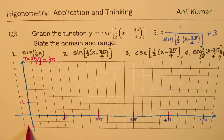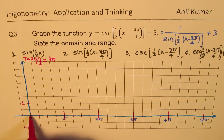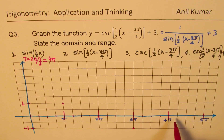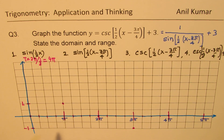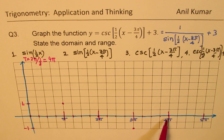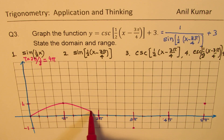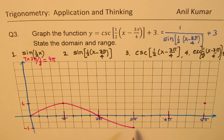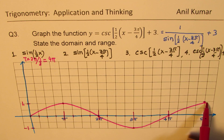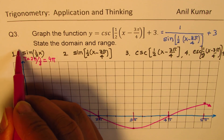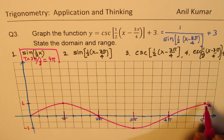The cycle starts at 0, reaches maximum, returns to 0, reaches minimum, and returns to 0. Joining these points gives us the graph. Starting at 0, maximum, 0, minimum, 0 — and then it continues to a maximum at 5π. This is our graph of sin(½x) with time period 4π.